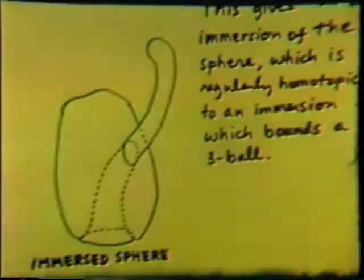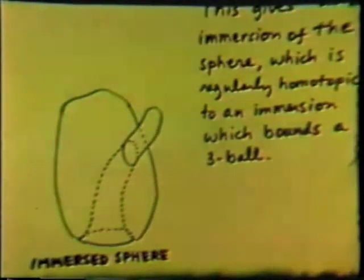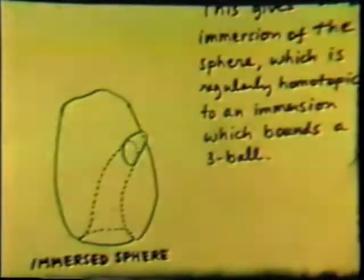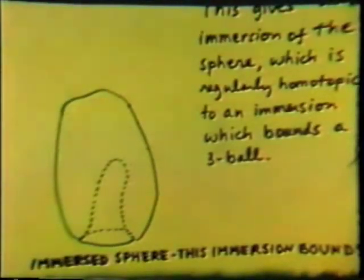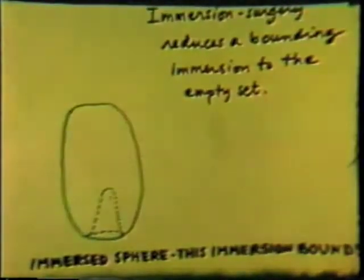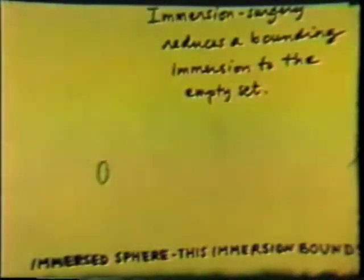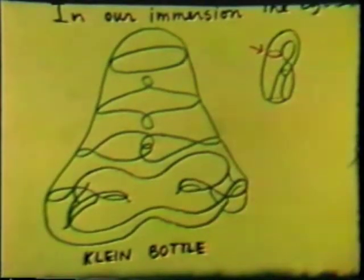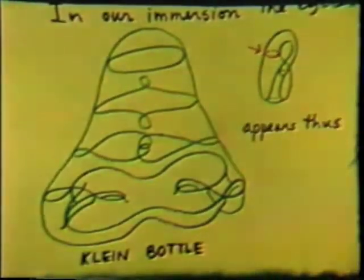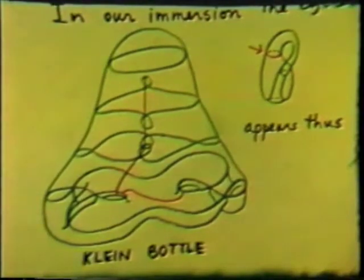Any immersed sphere is regularly homotopic to an immersion which bounds a 3-ball. The immersion now bounds a 3-ball. Immersion surgery reduces a bounding immersion to the empty set. In our immersion, that cycle appears thus.